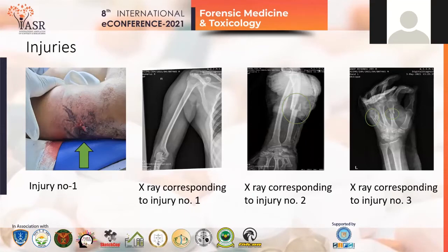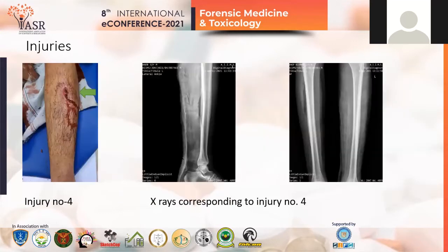Picture four showed another swelling of size 5×3 cm present over the left wrist. The age of the injury was fresh, and the weapon used was blunt. The X-ray showed a displaced fracture of the shaft of the metacarpal of the left index finger and the right ring finger. So injury number three is grievous in nature.